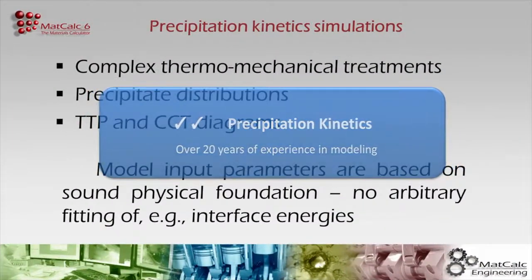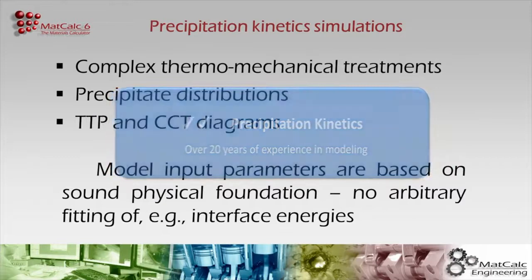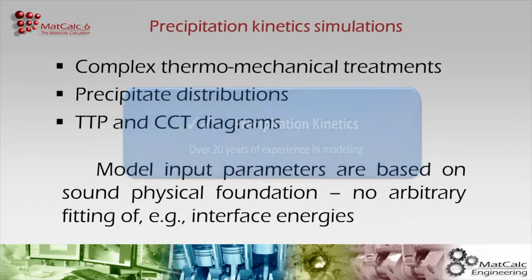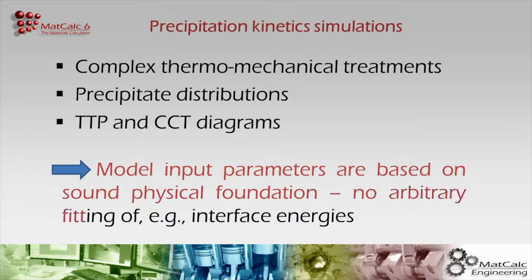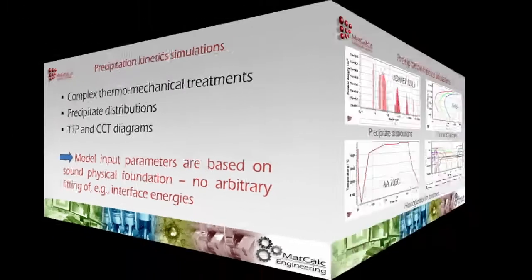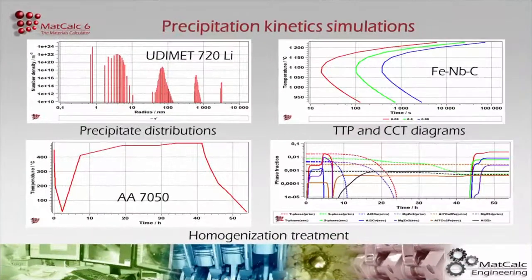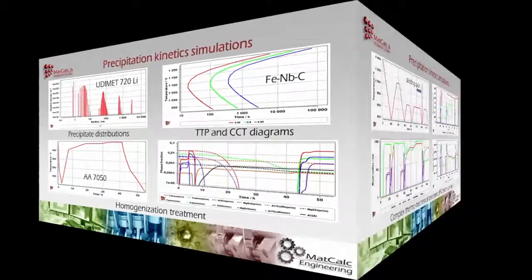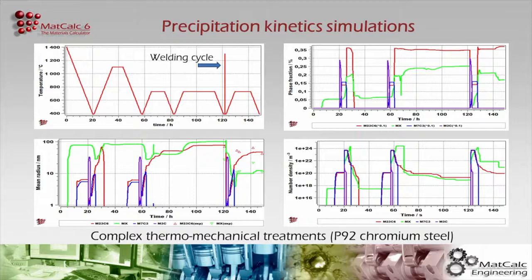MATCALC is a pioneer in development of models for precipitation kinetics that have a strong physical basis and minimize the need for fitting parameters. Use MATCALC to simulate how the composition and size distribution of both stable and metastable precipitates evolve during complex thermochemical treatments, or calculate isothermal or continuous time-temperature precipitation diagrams for your alloy system.